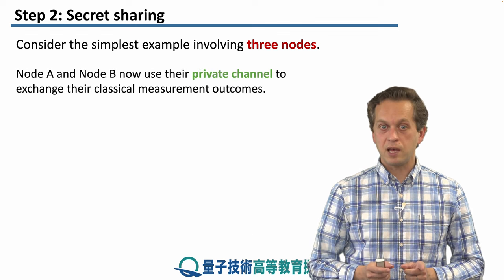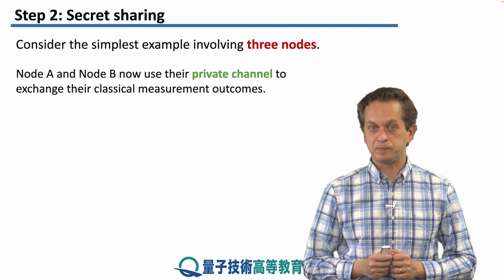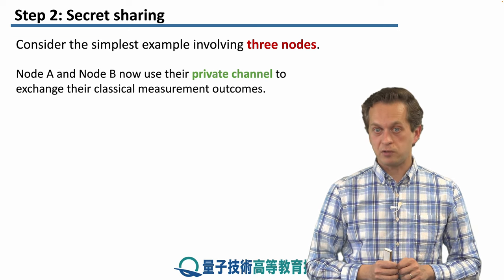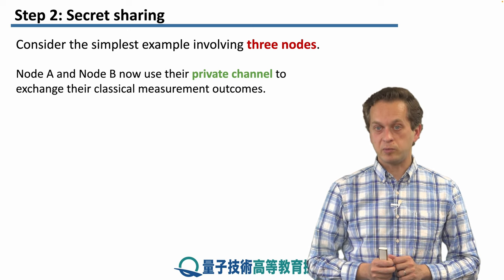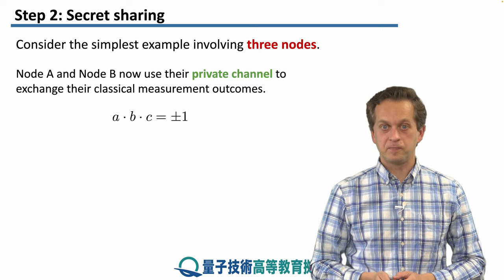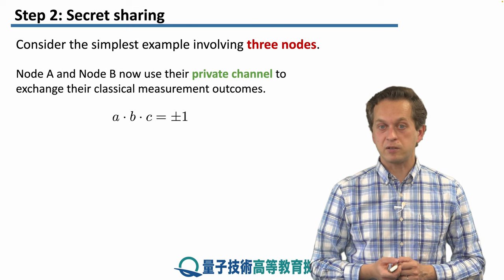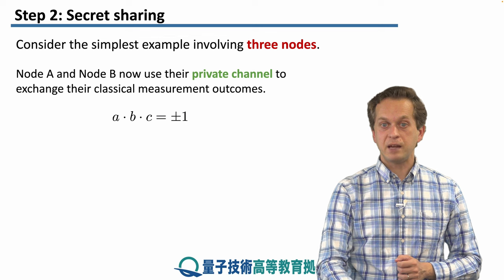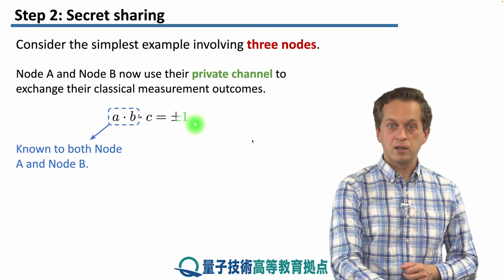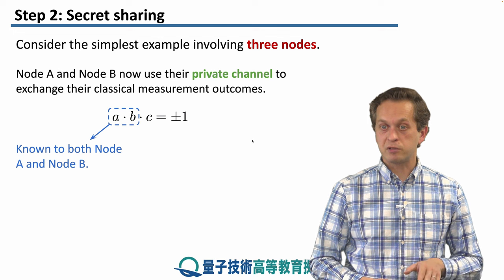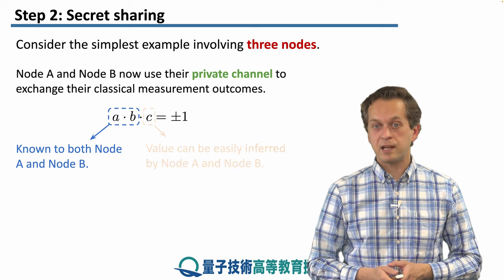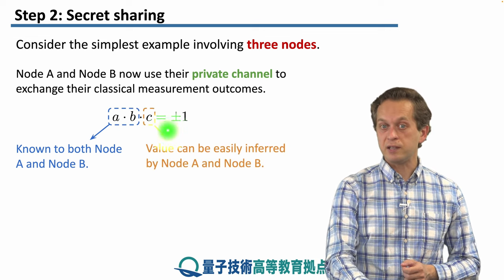So now, nodes a and b use their private channel. So they must have some way of communicating privately without revealing the contents of the communication to the rest of the network. And they exchange their classical measurement outcomes. So a learns the value of b, and node b learns the value of a. Because a and b know the classical outcome small a, small b, they also know the value of the product of a × b. This allows them to infer the value of c quite easily from this formula.